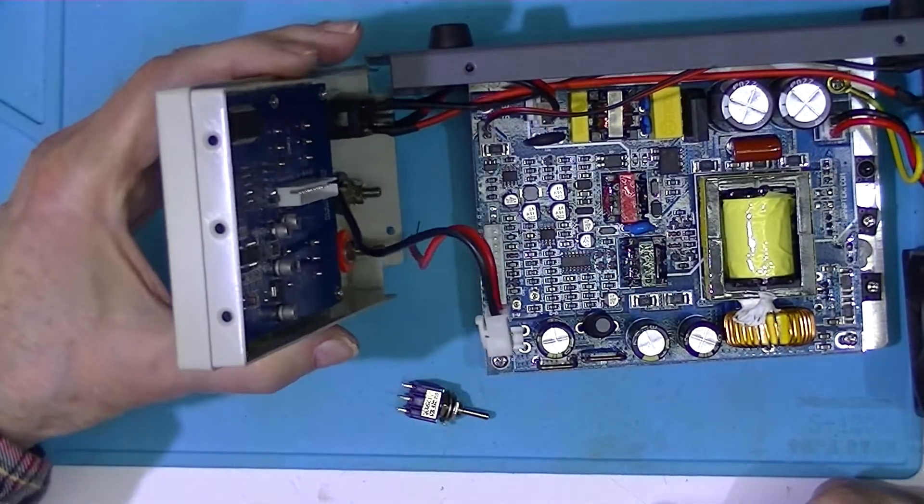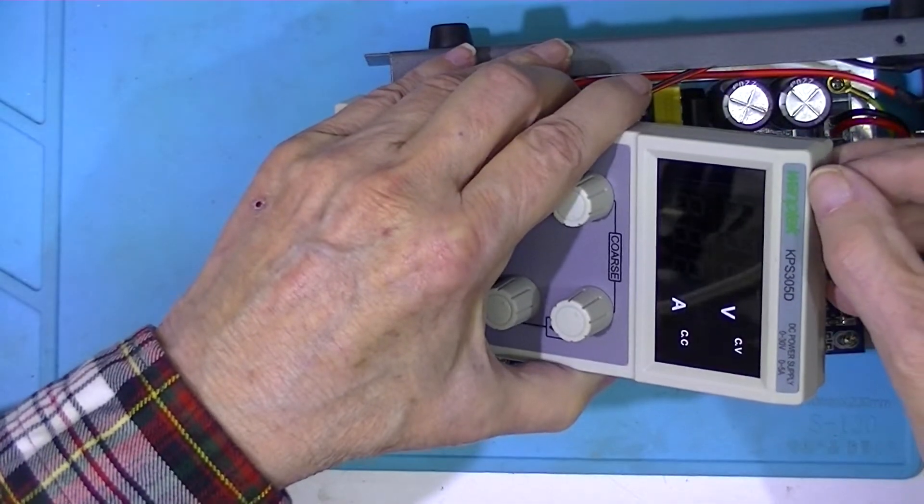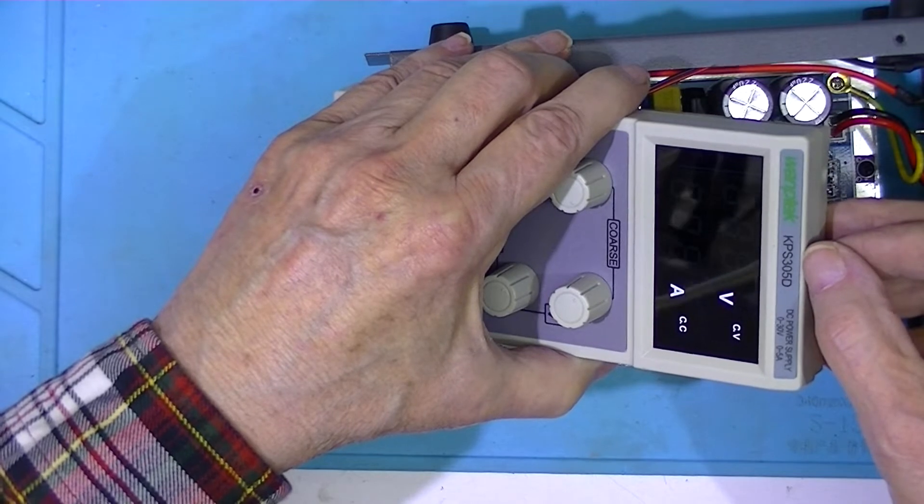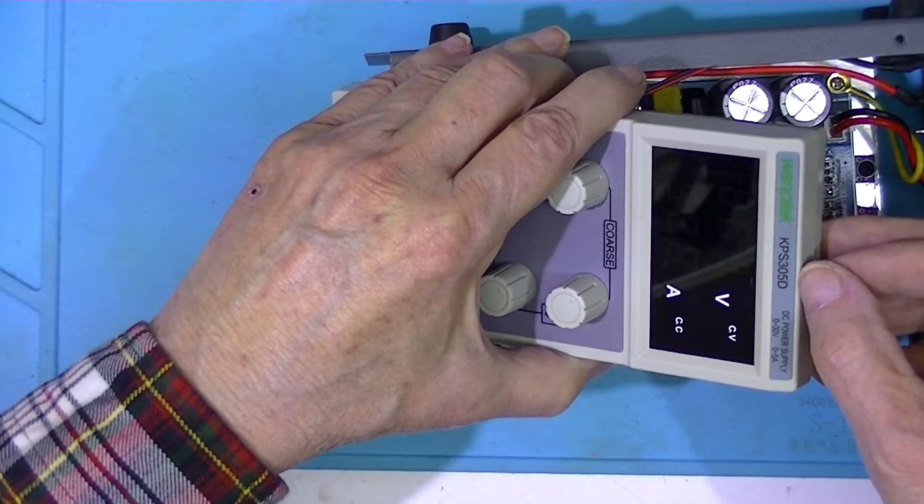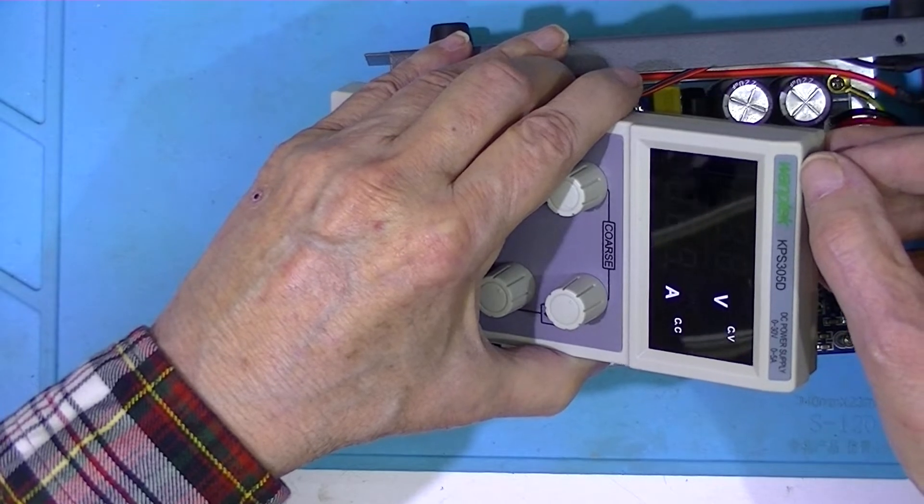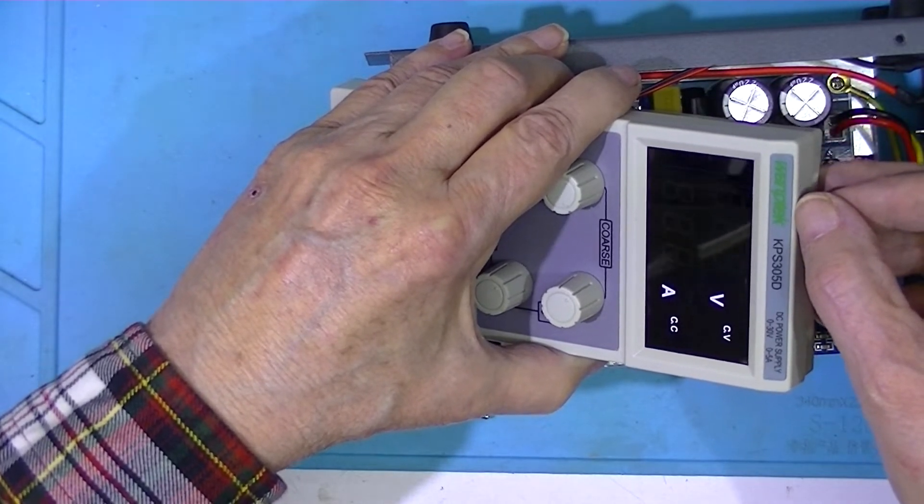As you can see, I've opened up this One-Tek 30-volt, 5-amp power supply. Now, this is also sold as an Even-Tek, E-V-E-N-T-E-K.